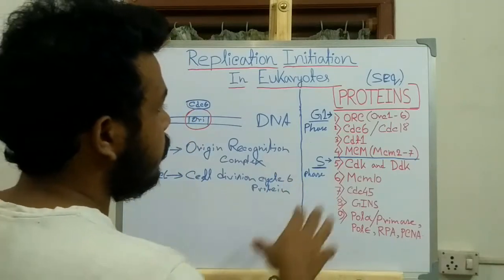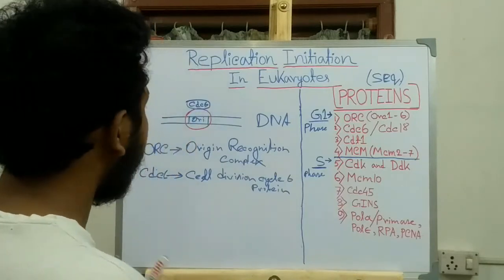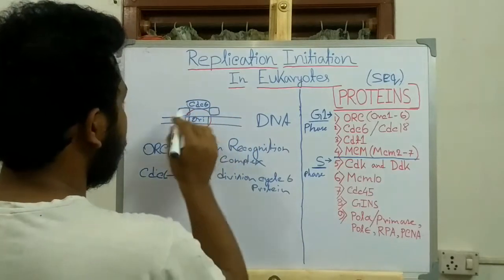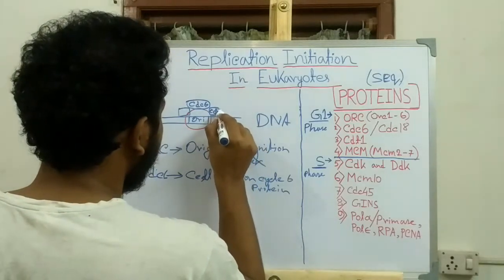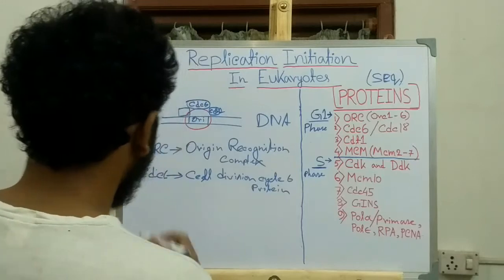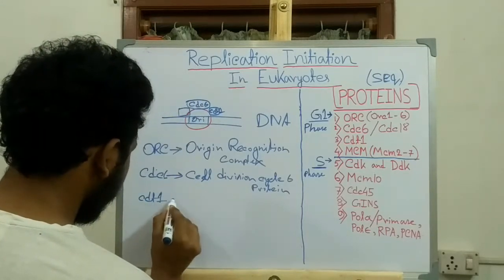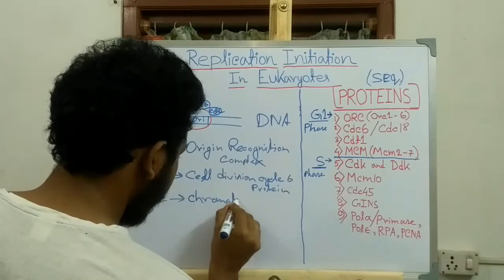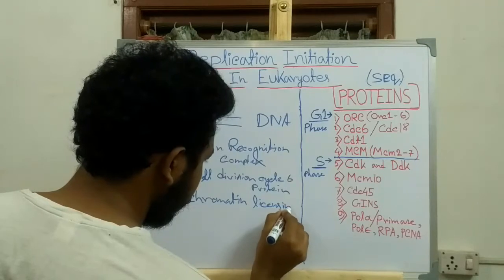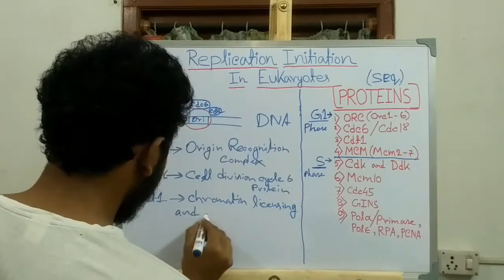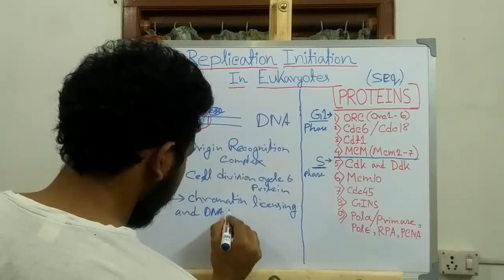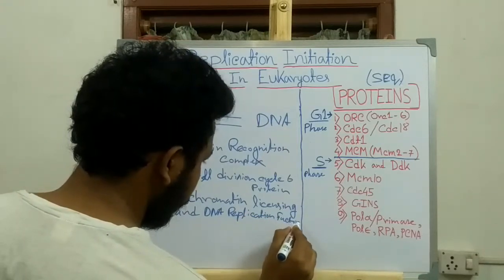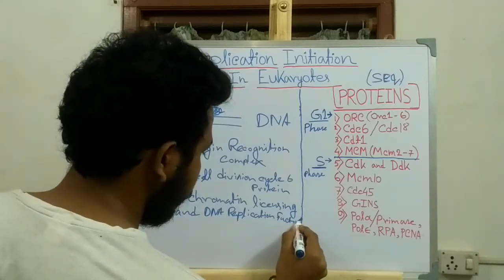The third protein is CDT1. CDT1 binds to the CDC6 protein at the origin. CDT1 stands for chromatin licensing and DNA replication factor 1.